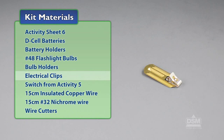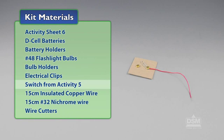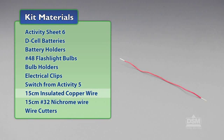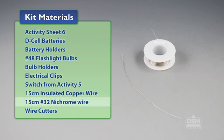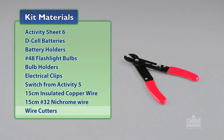You'll also need electrical clips, switches from Activity 5, 15 centimeter insulated copper wire pieces, a roll of number 32 nichrome wire, and wire cutters.